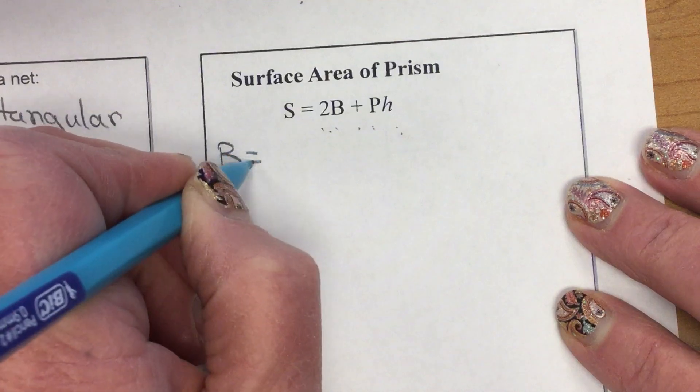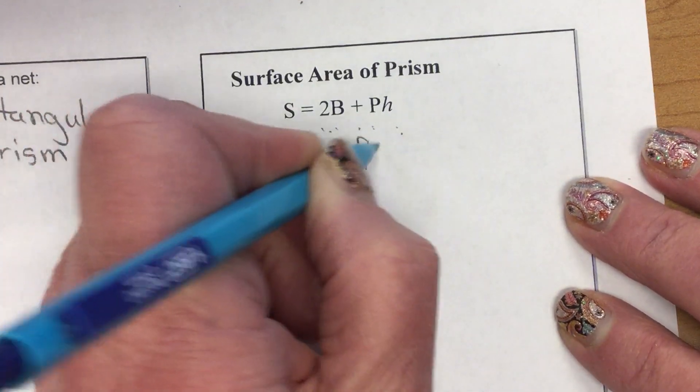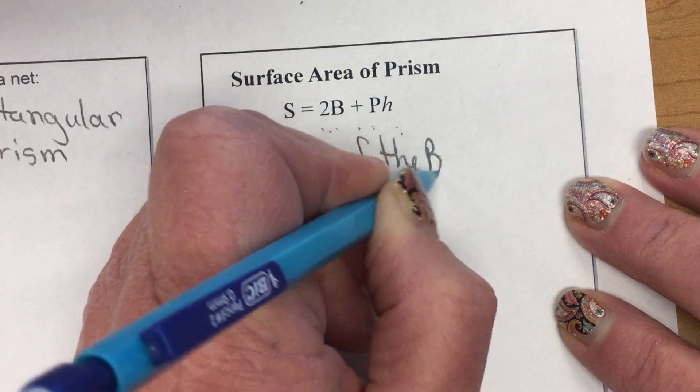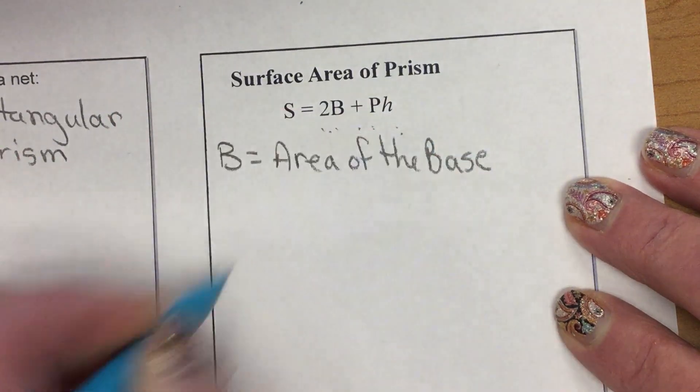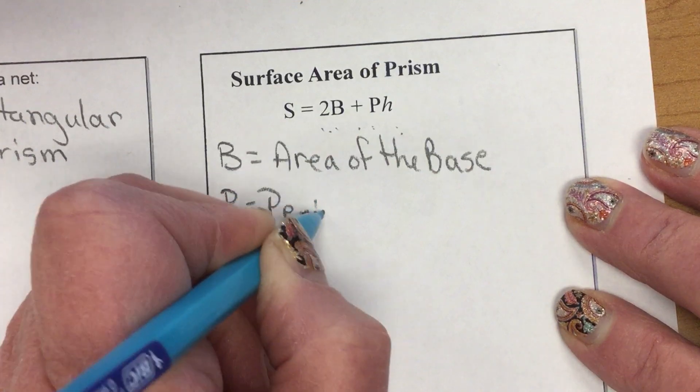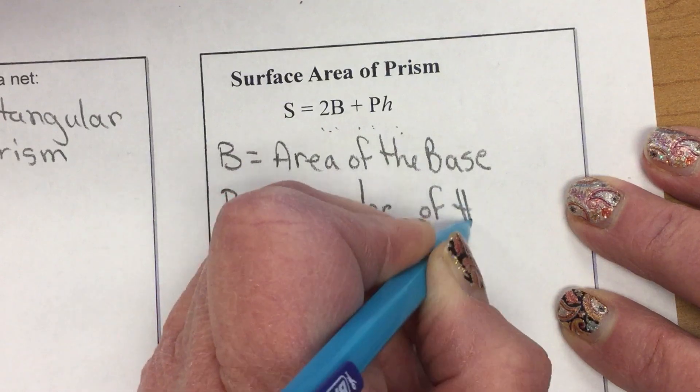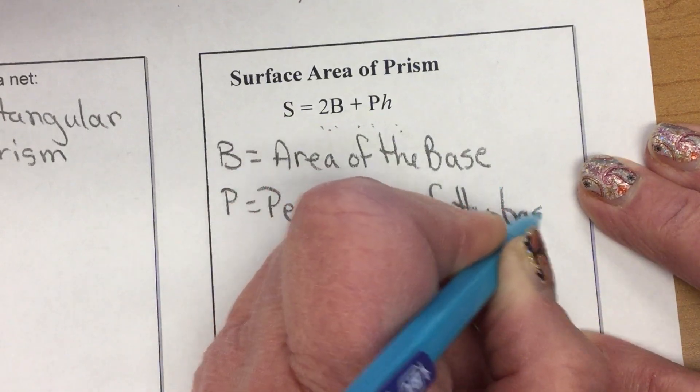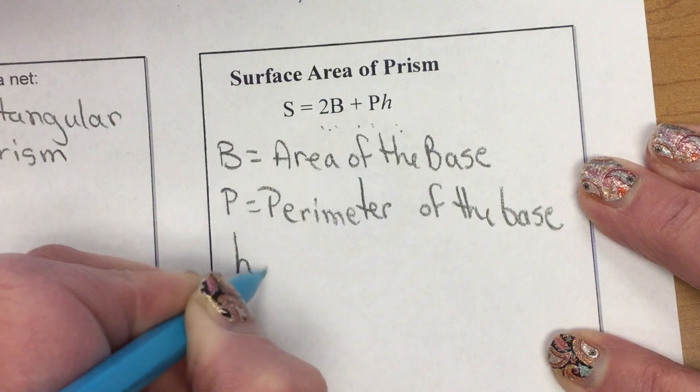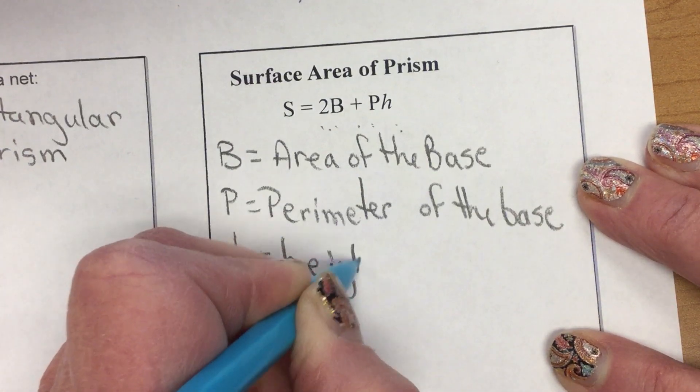Where capital B equals area of the base, and H is the height of the prism.